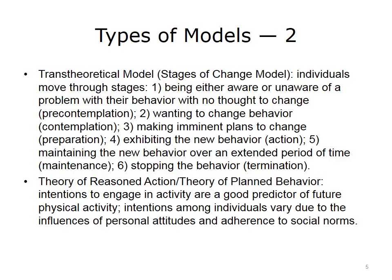A second model is the trans-theoretical model, or the stages of change model. This often describes how individuals move through six stages. The first stage is being aware of a problem. The second stage is wanting to change. Third comes planning to change — that is, making preparations. The fourth stage is action, which is followed by the fifth stage, maintenance. The sixth stage would be termination. So if you think about this as your New Year's resolution, you might say it's December and you might want to make a New Year's resolution — that's sort of this pre-contemplation period. The contemplation period would then involve deciding what sort of resolution you want to make: go to the gym every day, lose 10 pounds, something along those lines.